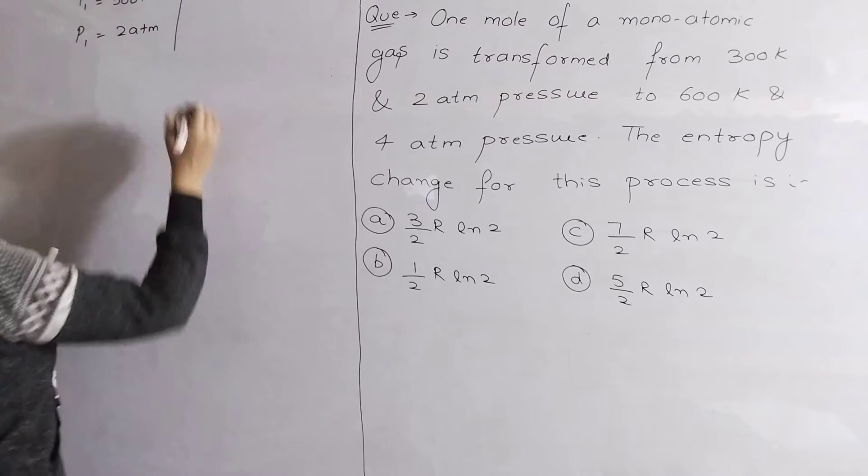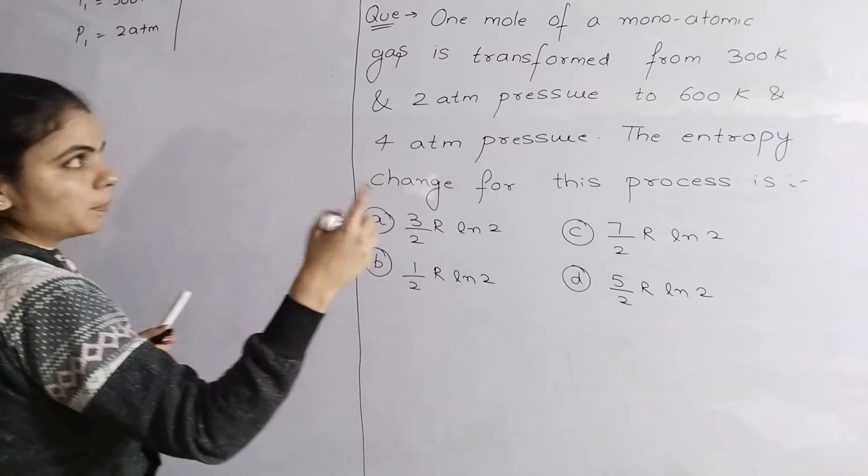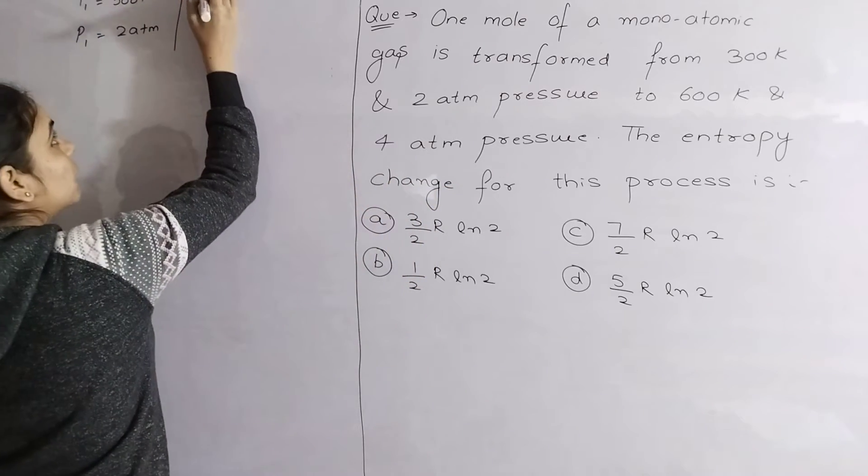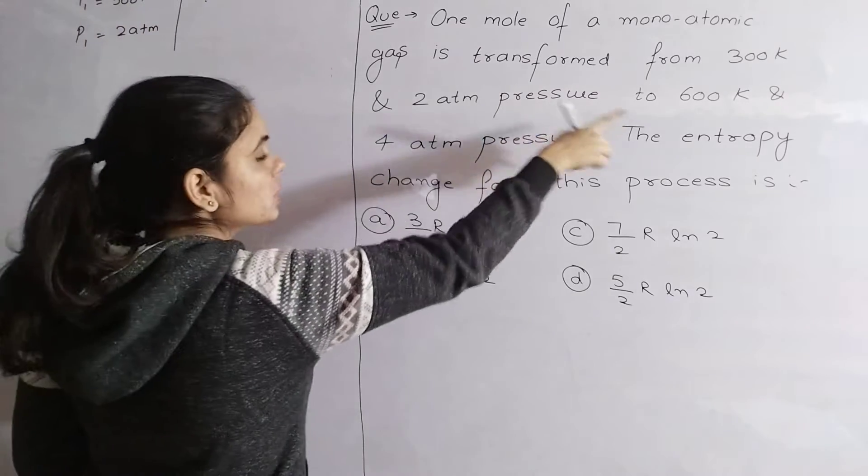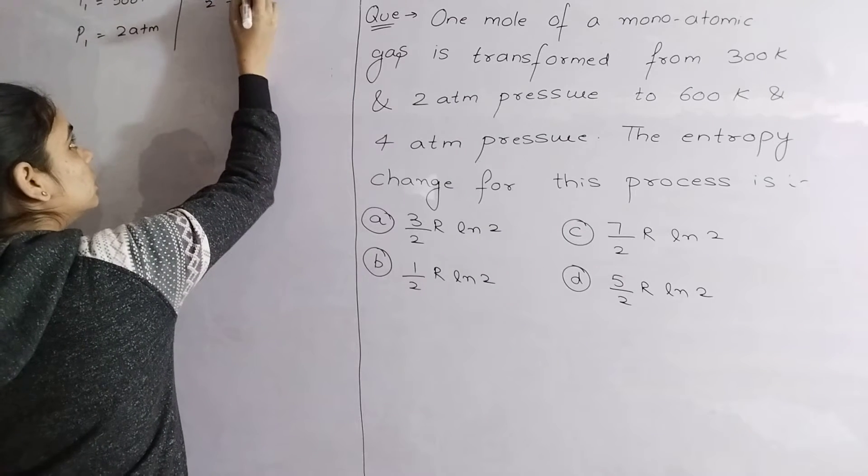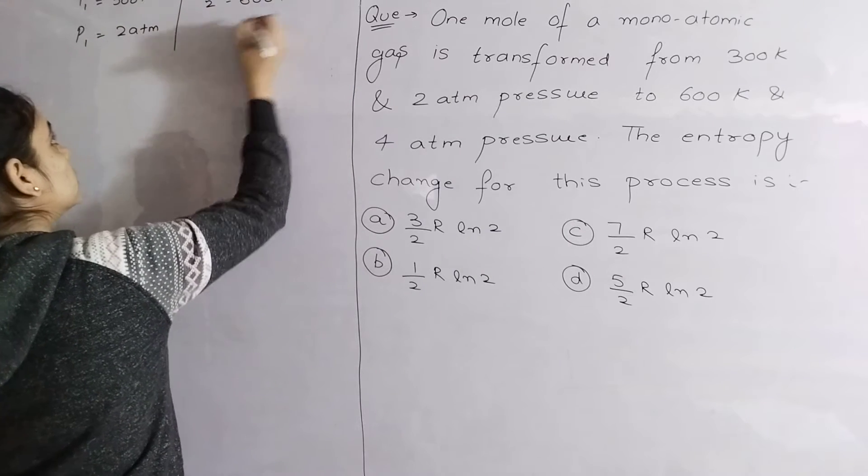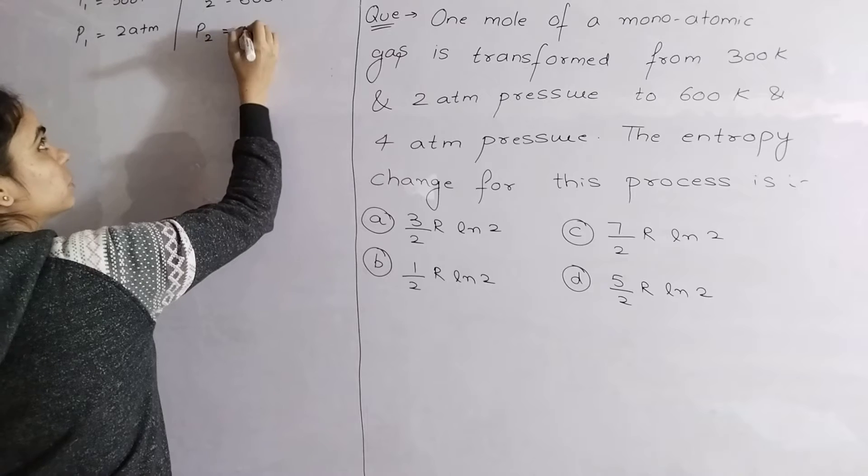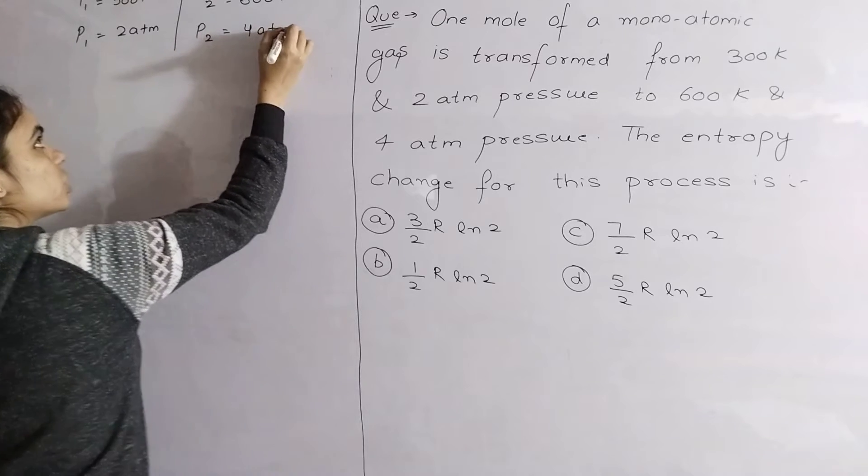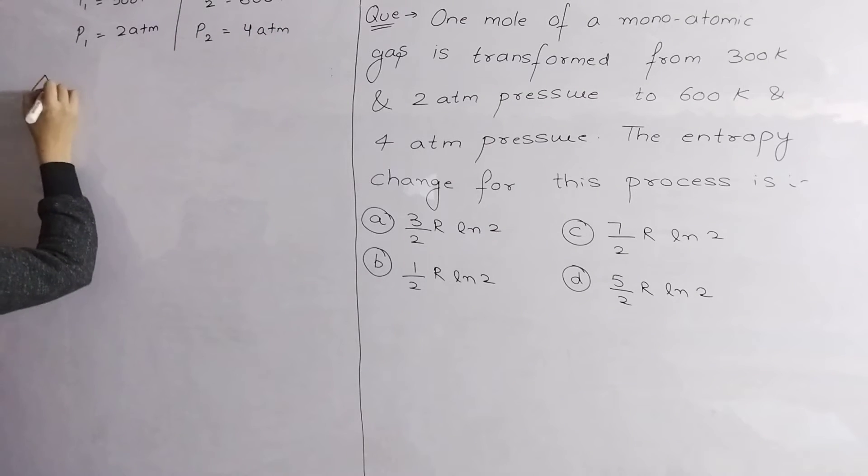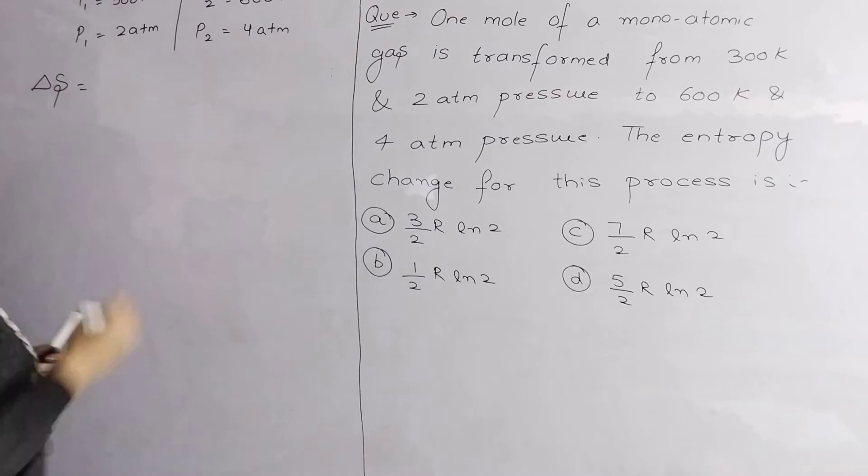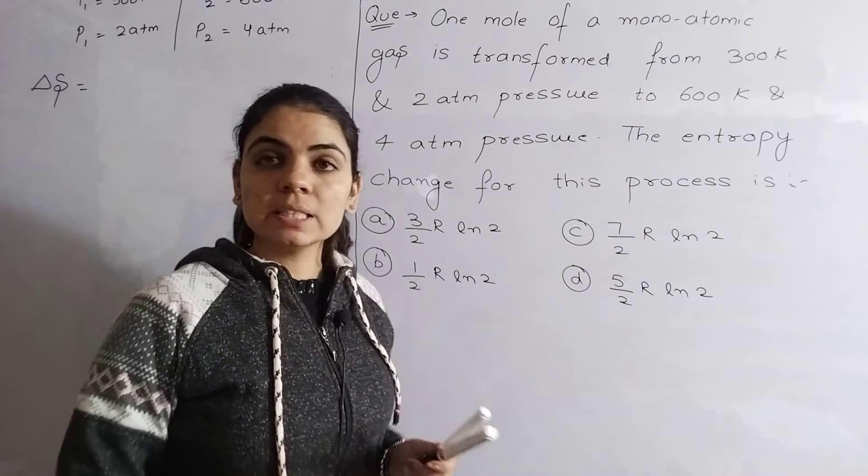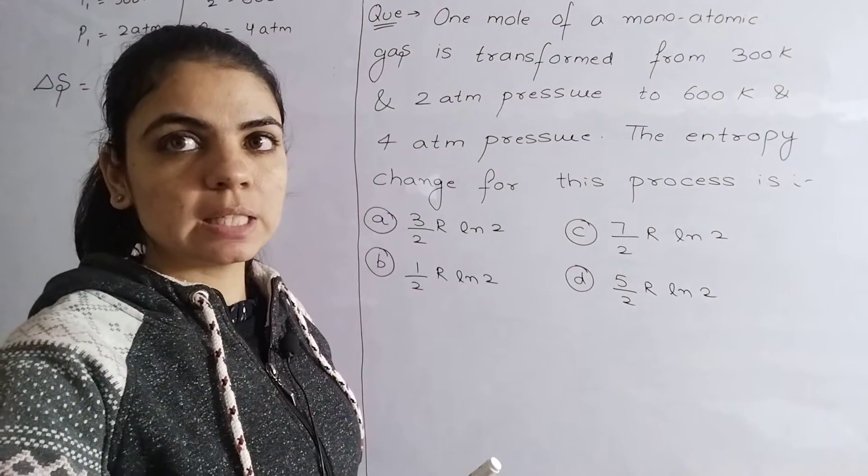To 600 Kelvin and pressure is 4 atmosphere. The entropy change delta S we have to find. For entropy change there are many formulas, but there are simple formulas that we will discuss in this series.